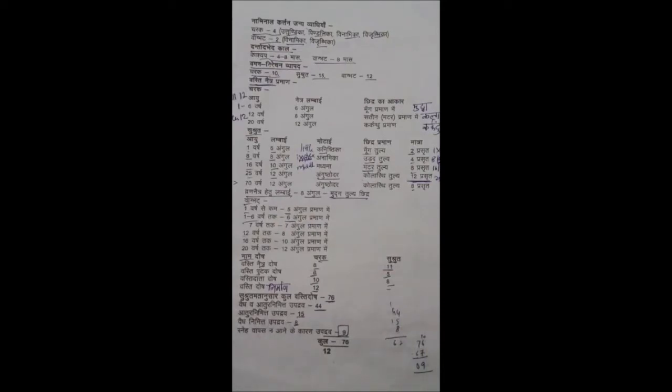છિદ્ર પ્રમાણ 8, પ્રસ્ત માત્રા 16. 16 વર્ષ આયુ, 10 અંગુલ લંબાઈ, અંગુષ્ઠોદર મોટાઈ, કોલાસ્થિ તુલ્ય, છિદ્ર પ્રમાણ 12. 25 વર્ષ, 12 અંગુલ લંબાઈ, અંગુષ્ઠોદર મોટાઈ, કોલાસ્થિ તુલ્ય, છિદ્ર પ્રમાણ 12, પ્રસ્ત માત્રા.